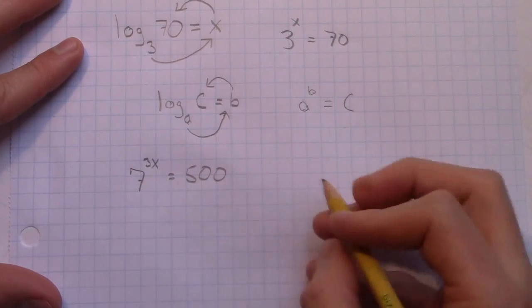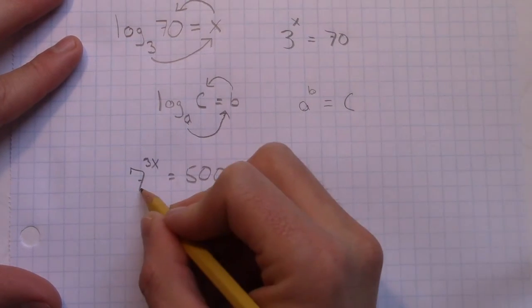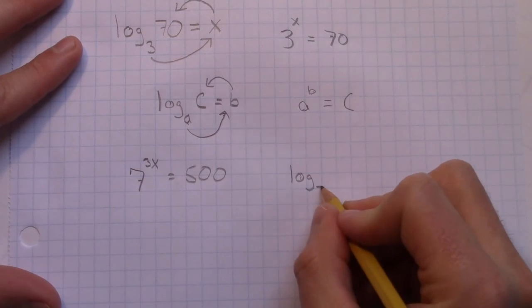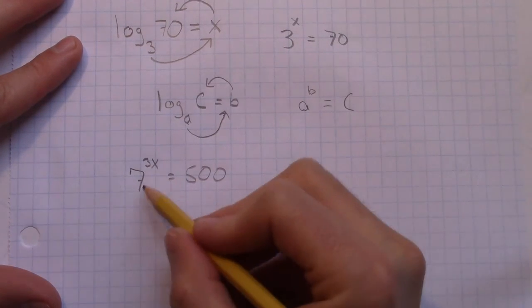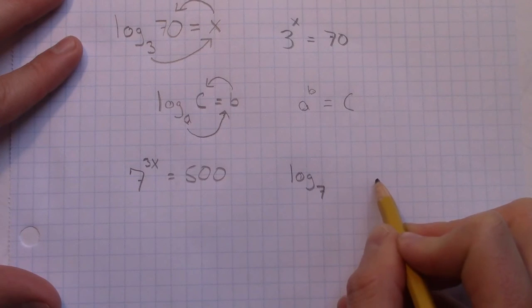This is the base, right? So if we have a log, we need a base. What's the base? The base right here, same as this part. And then remember, 7 to the power of 3x, so the circle would go this way.